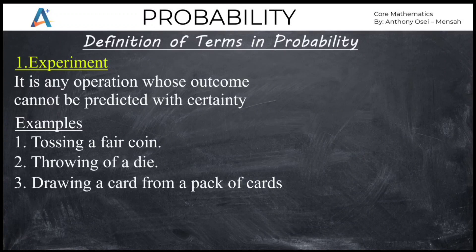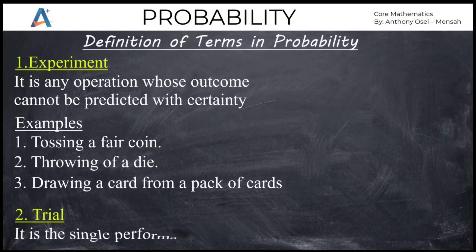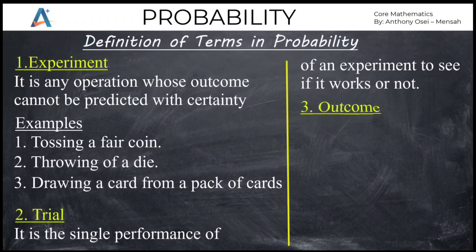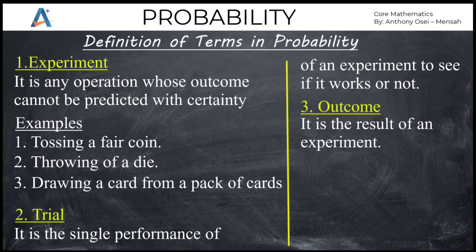The next terminology is trial. A trial is a single performance of an experiment — you try something to see whether it will work or not, and such a performance is called a trial. The next term is outcome. An outcome is the result of an experiment. When you perform an experiment and get a result, that result is called an outcome.